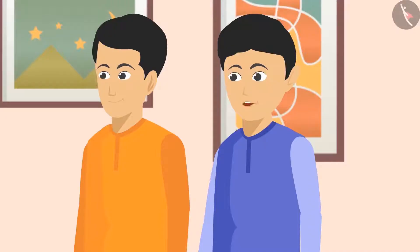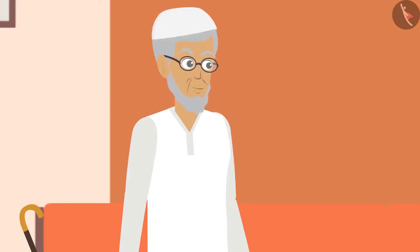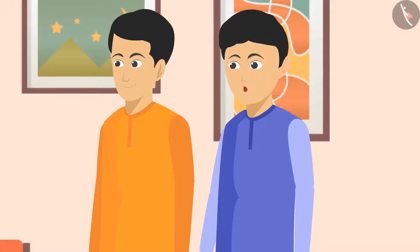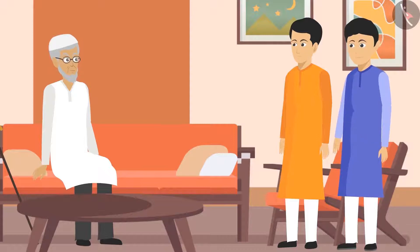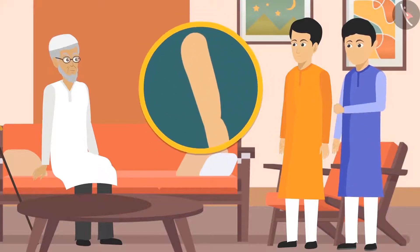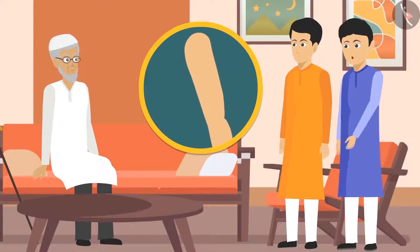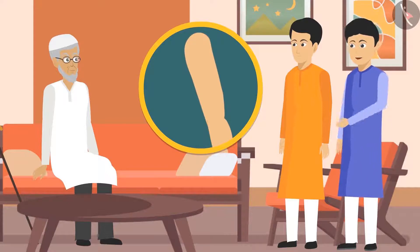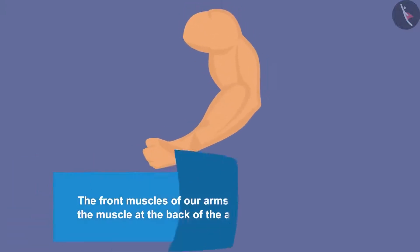'Chacha ji, let me try. Our muscles can only pull bones by contracting but cannot push them. That is why at least two muscles are needed to cause movement in a bone. For example, if I close my fist and touch my chest, the front muscle of my arm swells as it has contracted. If I take my hand back, this muscle will relax and the muscle at the back will contract.' 'Well done! The front muscles of our arms are called biceps and the muscles at the back are called triceps.'